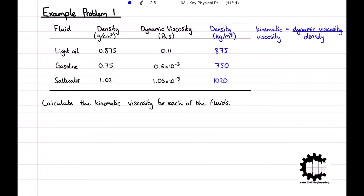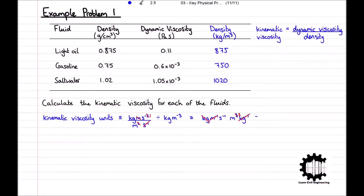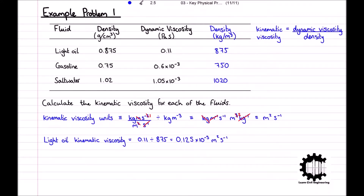Having worked out the densities in kilograms per metre cubed, we can now work out the units for kinematic viscosity using our equation. The unit for dynamic viscosity is pascal seconds, which is equivalent to force per unit area divided by the rate of shear, and the dynamic viscosity is being divided by the density. By eliminating common terms, we can work out that the units for kinematic viscosity is metres squared per second. Now we can substitute our values into our equation. The kinematic viscosity of our light oil is equal to 0.11 divided by 875, which equals 0.125 times 10 to the power of minus 3 metres squared per second.